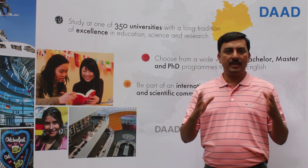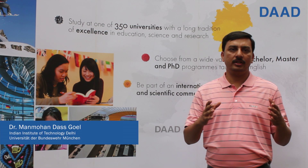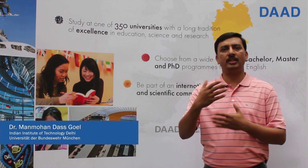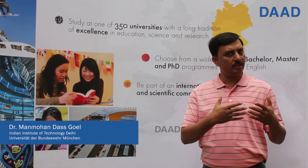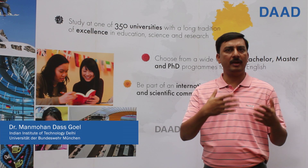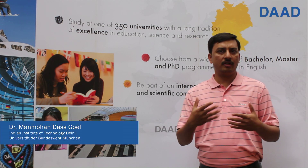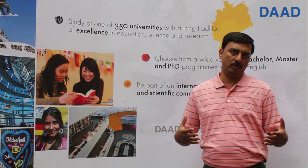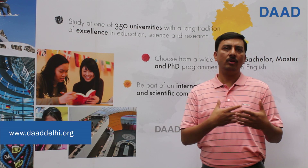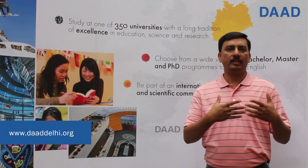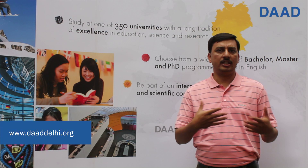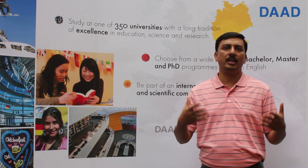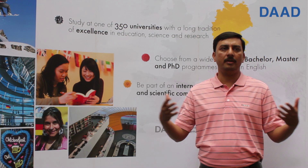You can find a PhD guide or host in Germany through your faculty professor, by attending some conference, or by referring to journal papers published by the German counterpart. Another way is finding through the internet — for example, Research Explorer. You can visit Research Explorer to find a professor's profile and the research carried out by that professor.